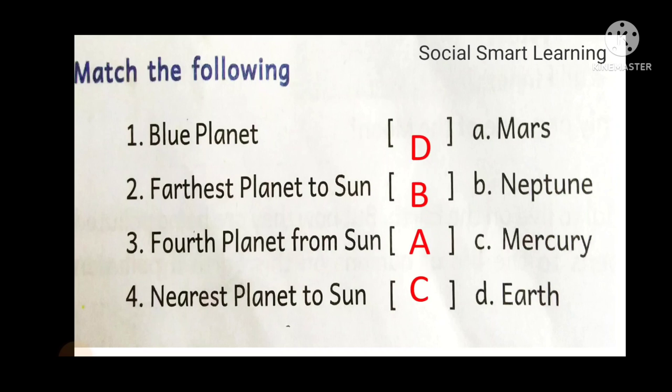Match the following: Blue planet — Earth is called the blue planet. Fourth planet from the sun — Mars. Nearest planet to the sun — Mercury.